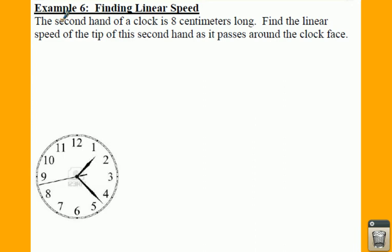Let's look at example six. We're talking about the second hand of a clock that is eight centimeters long. Find the linear speed of the tip of the second hand as it passes around the clock face. We're going to find the linear speed, so linear speed is s over t, which is the same thing as radius times theta over time. Your radius is eight centimeters.